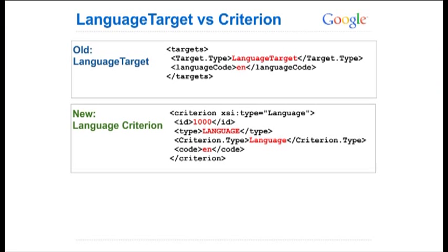Let's look at a response from the campaign target service in v201101. If you did a campaign target service dot get in the previous version looking at language targets, you might see target type is language target, language code is English. In v201109, we do campaign criterion service dot get and get back an array of criteria objects. Here we have criterion XSI type is language, with an ID of 1000 which identifies it as English, plus the language code EN and some other data.